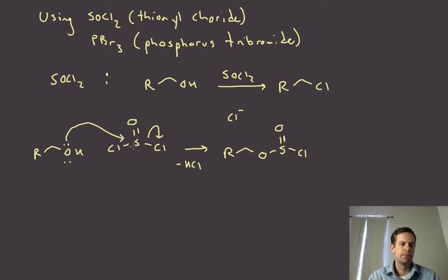So the chloride ion that, probably the one that we just kicked off, can now do that backside attack displacement. And what's going to happen here is, instead of just this, we could just show this leaving as SOCl. But there's actually a further driving force. This can kick in to form an SO double bond and in doing so kick out chloride.